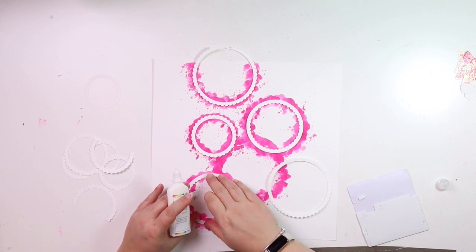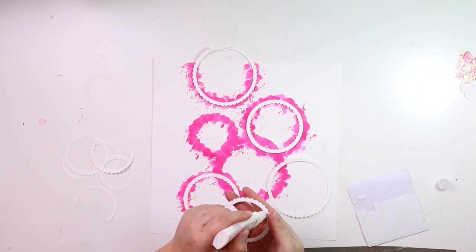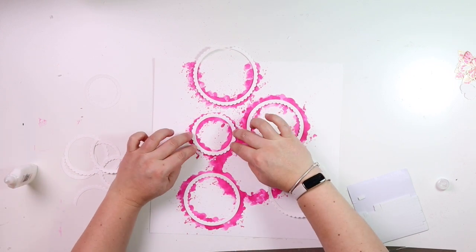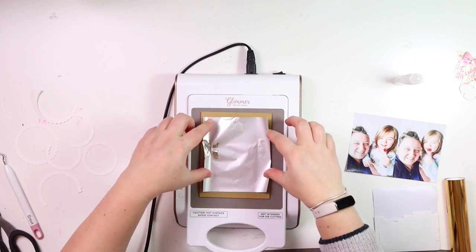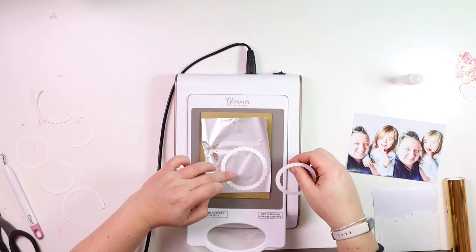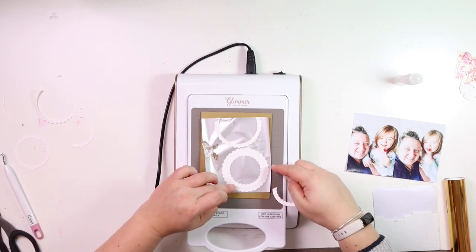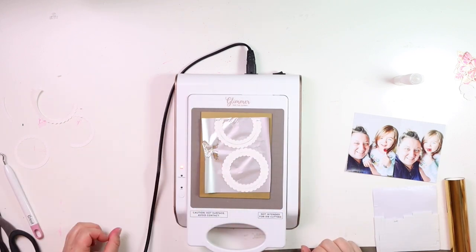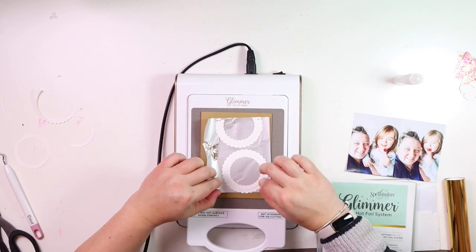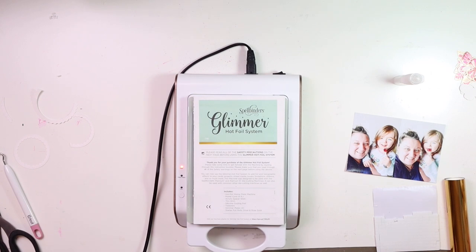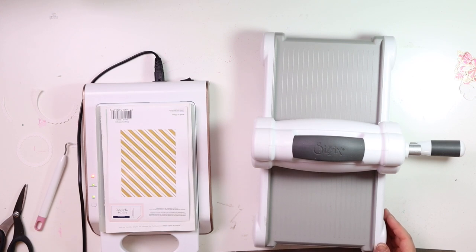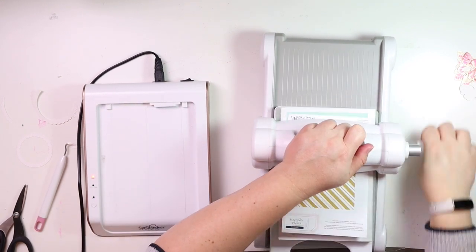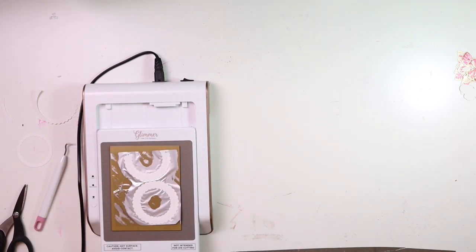I then decided to foil directly some of the circles. It's one of the techniques I've seen in some videos, and I thought that was a great idea to add a little bit more gold to my layout. Because we have the gold onto the butterflies that we foiled previously, I wanted to add a little bit more gold just to give it more consistency.